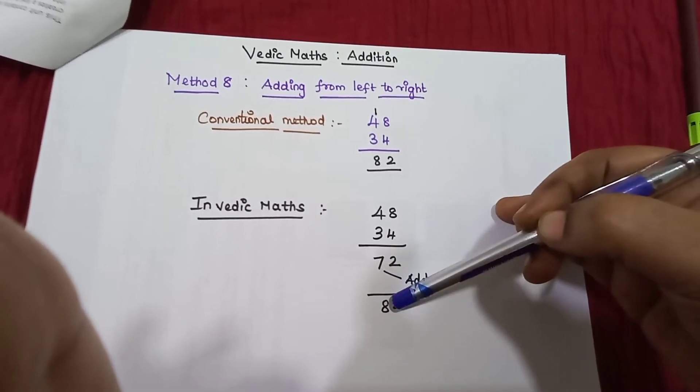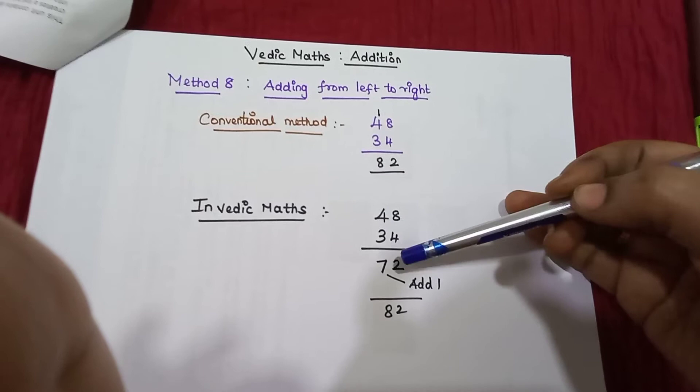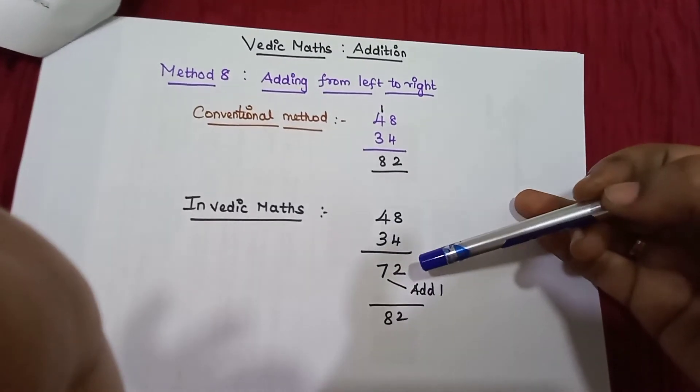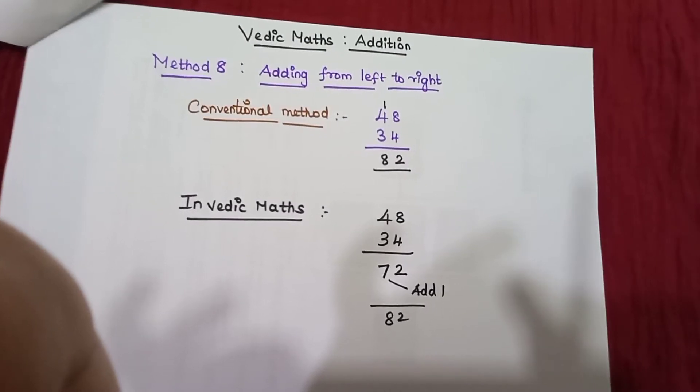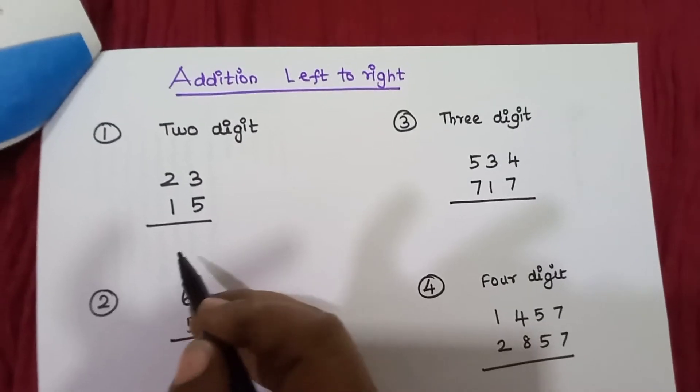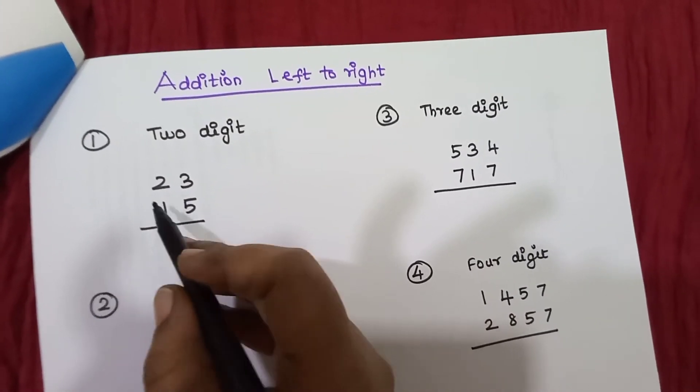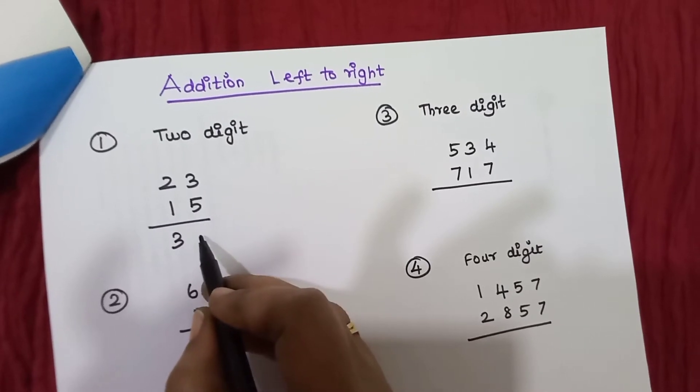1, add 1, 82. We add 1 in the result. This is adding from left to right. Let's work on some problems. Two-digit numbers first: 2 plus 1, 3. 5 plus 3, 8.